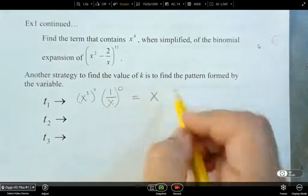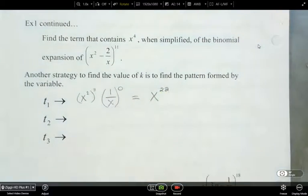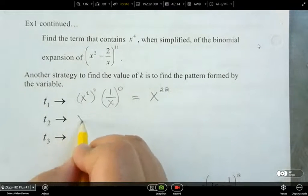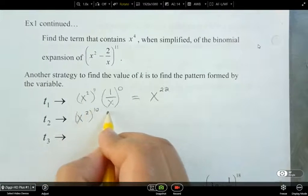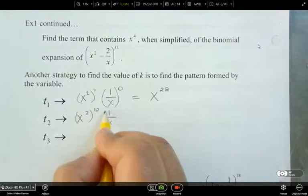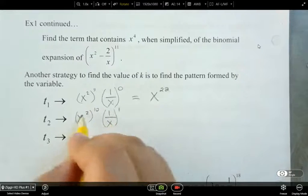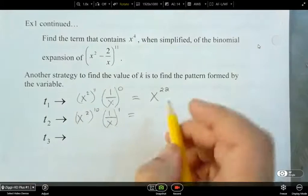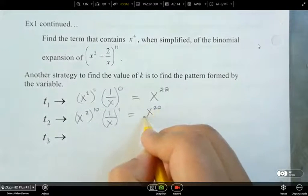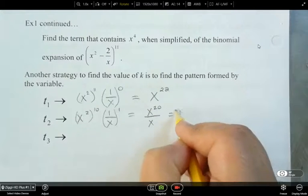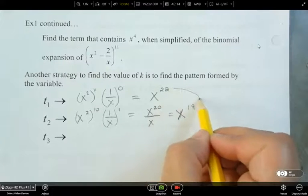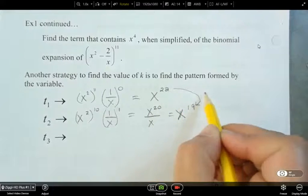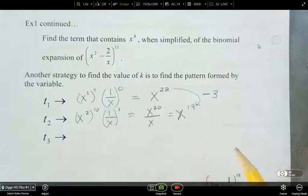That's the power of 11. So this comes down, and this simplifies to be x to the power of 22. Now let's look at what the second term would be. So it would be x to the power of 2 to the power of 10, and then 1 over x to the power of 1. So how does this all simplify? So that's x to the power of 20 over x, which is x to the power of 19. So what's the difference of the exponents from here to here? We're minusing 3, right?